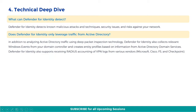Does Defender for Identity only leverage traffic from Active Directory? In addition to analyzing Active Directory traffic using deep packet inspection technology, Defender for Identity also collects relevant Windows events from your domain controller and creates entity profiles based on information from Active Directory Domain Services. Defender for Identity also supports receiving RADIUS accounting of VPN logs from various vendors including Microsoft, Cisco, F5, and Checkpoint.